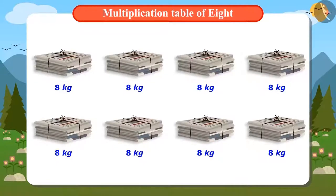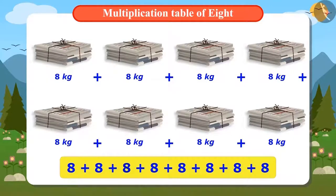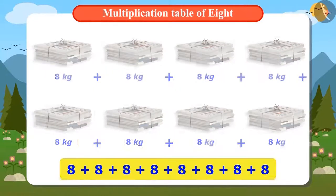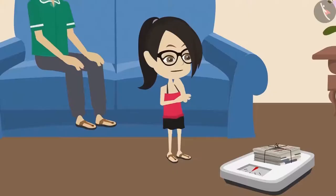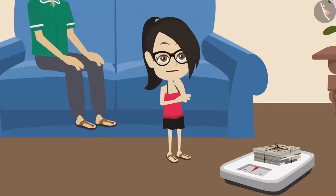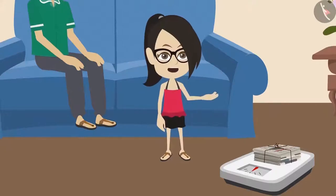To find out how many kilograms of newspaper there are, we add the weight of all the newspapers — that is, we add 8 eight times. This way, 8 has to be added 8 times. Can you suggest an easy way to solve this? Adding 8 eight times gives us the same answer as multiplying 8 by 8. But to solve this, I should know the multiplication table of 8. I don't know the table of 8 — do you?